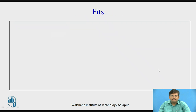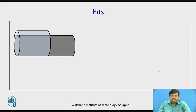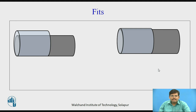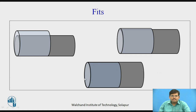Now moving further, look at the images on the screen — the first, the second, and the third. I suggest you pause the video and observe the relation between the hole and the shaft for all three images. In the first image, the hole and the shaft have a considerable gap between them. In the second image, the gap is a bit reduced. In the third case, the gap is zero and the size of the hole and shaft are nearly equal. So these are the various conditions which define fits: here the gap is more, here it is reduced, and here there is no gap at all.